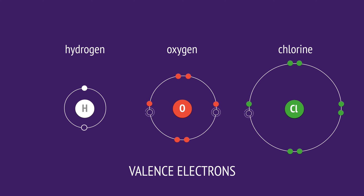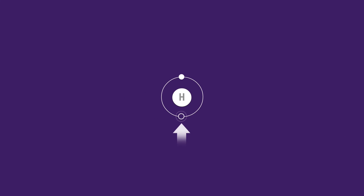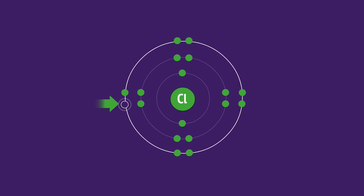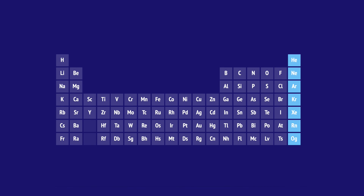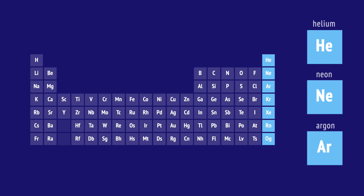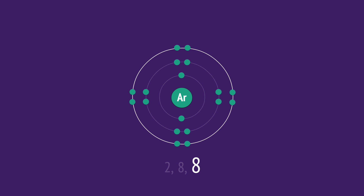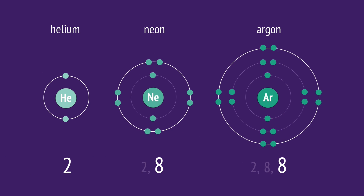Incomplete electron shells are less stable, so atoms try to complete their outer shell by forming bonds with other atoms. The most stable atoms are the group 18 noble gases, like helium, neon, and argon. Helium has a full first shell, neon has a full second shell, and argon has a full third shell.